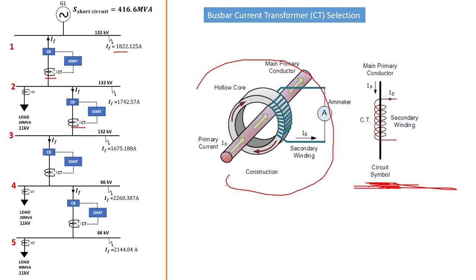The high-level current will be the current passing through here — so this could be our bus bar. That is a primary current flowing there, and that primary current will be proportional. The secondary current passing here will be proportional to Ip, which is the primary current. So it could be just a load current, a normal current, or it could be the short-circuit current, but it should be proportional to what we get here.